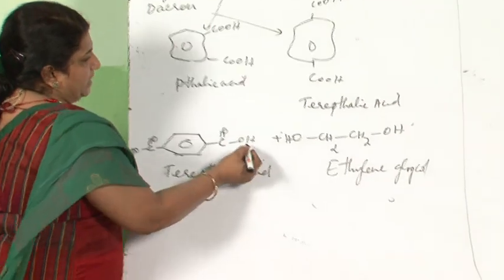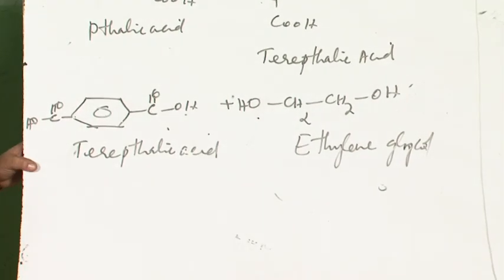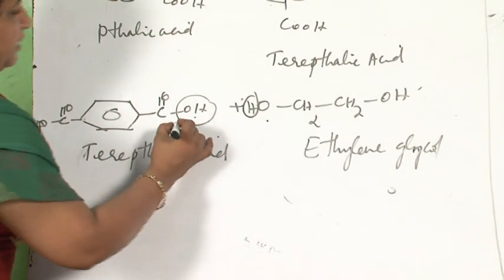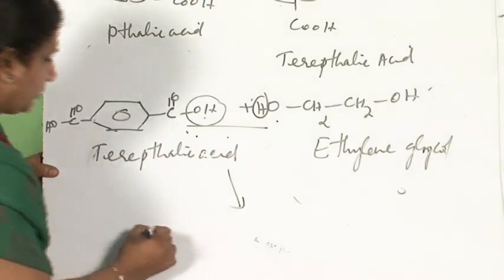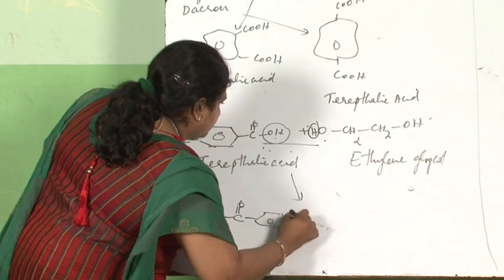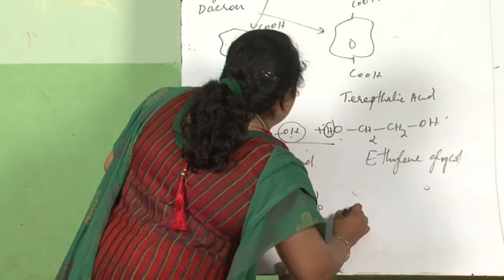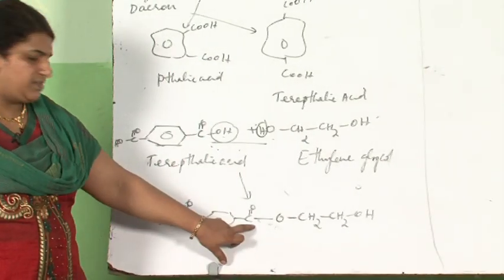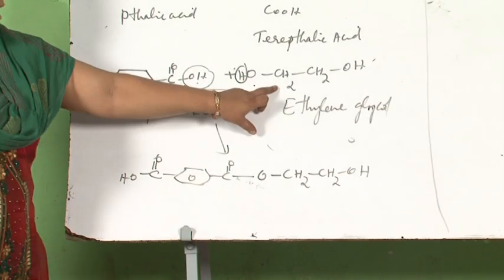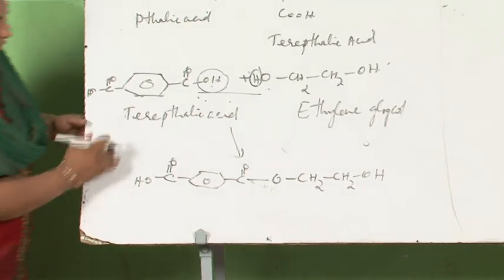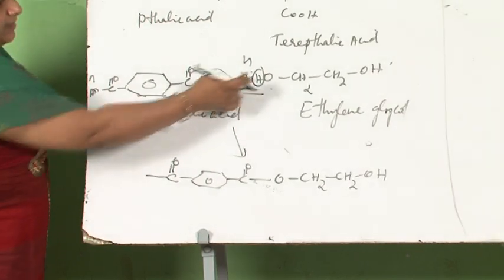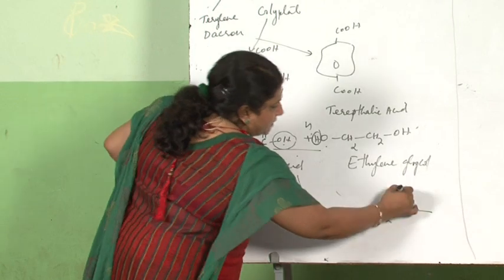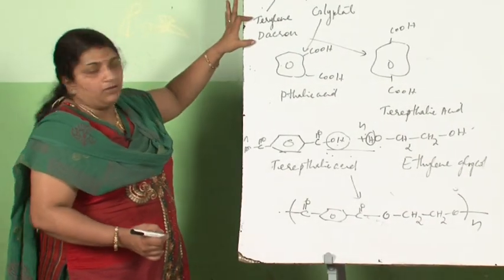In this esterification, OH is removed from the carboxylic acid and H is removed from the alcohol. The remaining OH group can again combine with another ethylene glycol molecule, with OH being removed. Writing this as N units, the polymer -[OC-C6H4-CO-O-CH2-CH2-O]n- is formed. This is terylene or Dacron, a polyester.